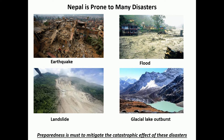Every monsoon we face floods and landslides, and on the northern part of the country we have the Himalayas, so Glacial Lake Outburst Floods are also a disaster we face. The country is very much prone to disaster. With the experience of the Nepal earthquake 2015, we think that preparedness is a must to mitigate the catastrophic effect of disasters, and physiotherapists and professional associations have a lot to do on this.